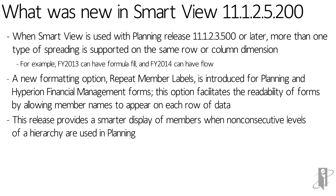This release also provides a smarter display of members in Planning forms when non-consecutive levels of a hierarchy are used. For example, using generation two and generation six, or level zero and level five — in the past, Smart View forms would try to indent five levels deep. Now it uses proportional spacing and only indents a little, since those four intermediate levels don't exist, taking much less room on your planning form.